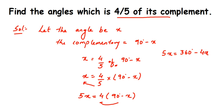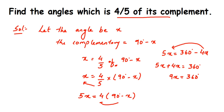Now I bring all variables to one side and constants to the other. Transposing minus 4X to the left side gives 5X plus 4X equals 360, so 9X equals 360 degrees. Transposing 9 to the other side gives X equals 360 divided by 9. Since 9 fours are 36, we get X equals 40 degrees.